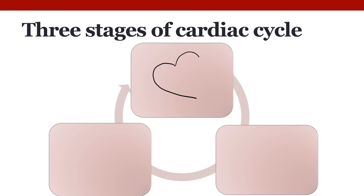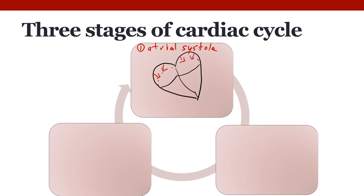We start with our heart looking kind of heart-shaped. The first stage of the cardiac cycle is atrial systole: the atria contract, the walls collapse down, that increases the pressure in there, pushes open the atrioventricular valves, and leads to blood flow from the atria to the ventricles. By the end of this, we have rather flattened-looking atria and rather swollen-looking ventricles.